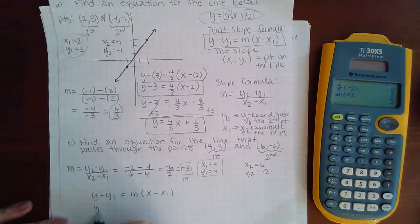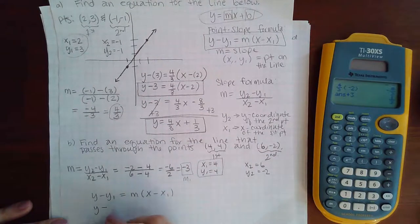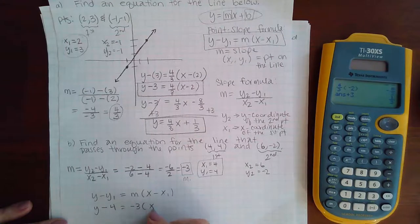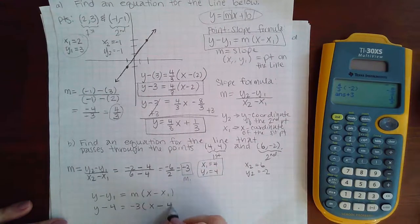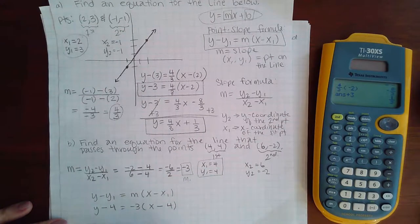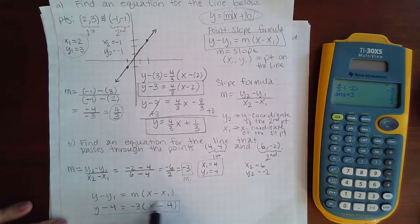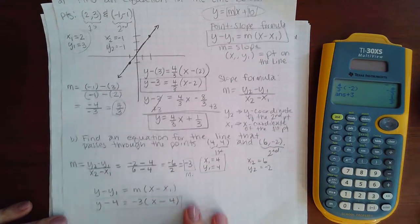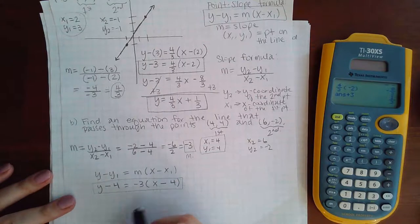So then I have y minus 4 equal to negative 3 times x minus another 4. And again, this would have been accepted by Alex, but I'm going to go ahead and write it and keep going so that I can write the formal answer.